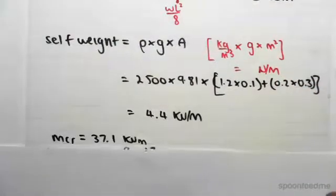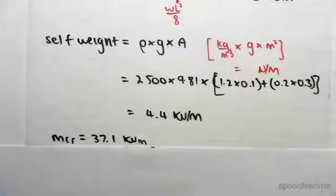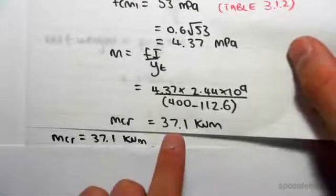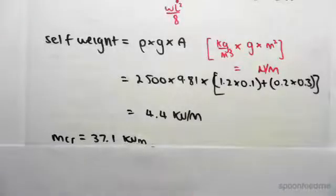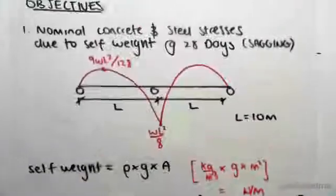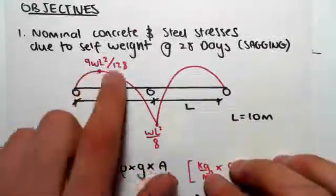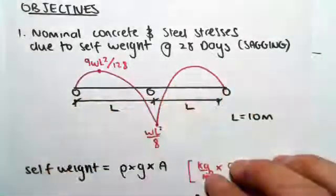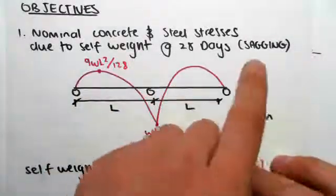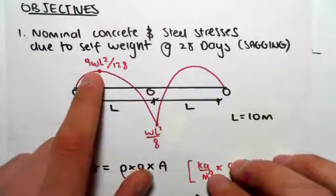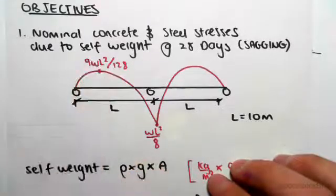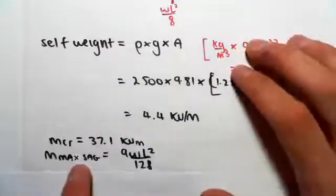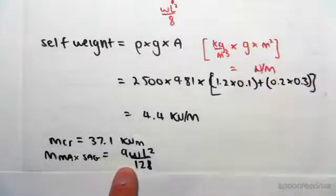We know from the previous video that the cracking moment is 37.1 kNm. We now want to determine the maximum moment that our T-beam actually experiences. We're doing the sagging case, so the maximum sagging occurs at 9wL² on 128, and that's going to give us the maximum sagging moment.